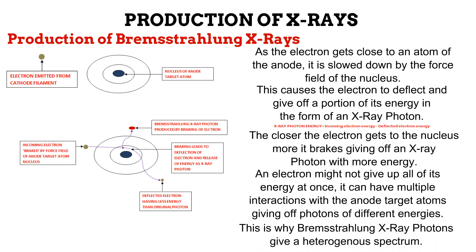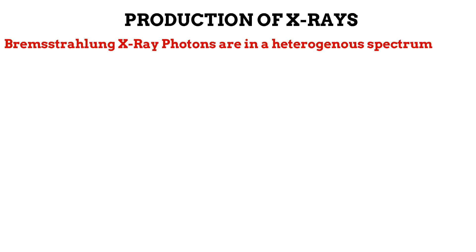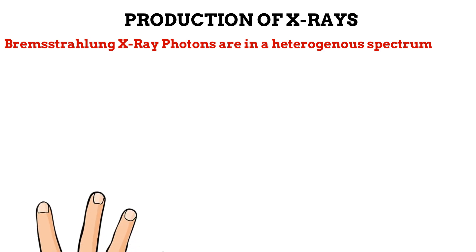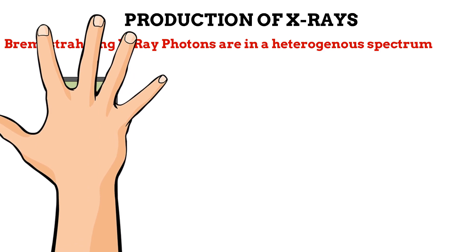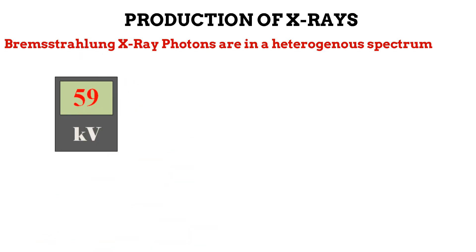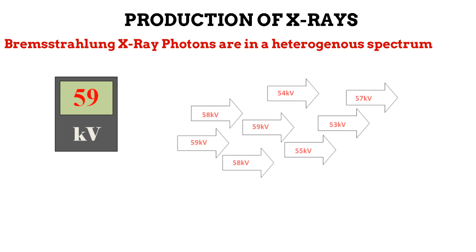This is why it is said that Bremsstrahlung photons are in a heterogeneous spectrum. If for a certain exposure a radiographer selects a kilovoltage of 59, the photons produced due to Bremsstrahlung interactions will not all have the same energy — they will be heterogeneous. One photon could possess 59 kV, another 58, another 53, and it keeps varying like that due to the multiple interactions that occur. This is what a heterogeneous spectrum means.